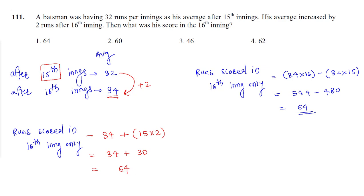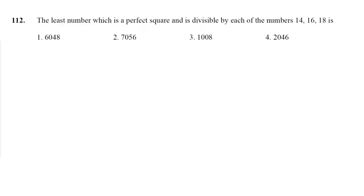Let's have a look at next question, question number 112. The least number which is a perfect square and is divisible by each of the numbers 14, 16 and 18. So we want a number which is completely divisible by 14, 16 and 18, means we need to find the LCM. We know that 14 = 7 × 2, 16 = 2^4, 18 = 2^1 × 3^2.